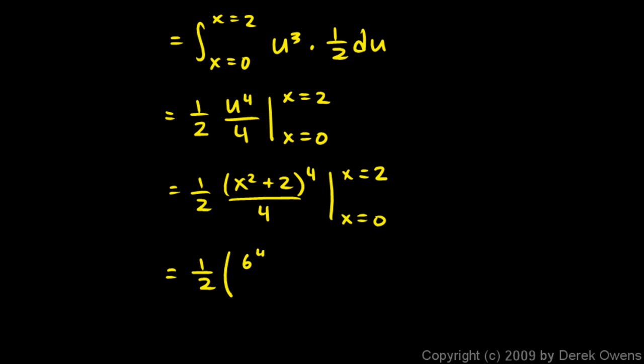So this is 6⁴/4 minus, and now we plug in the 0 right here for x. That's 0 + 2 is 2⁴/4, and I'm just keeping the 1/2 factored out over here. And this comes out to 1/2 times 324 minus 4, which is half of 320, which is 160. And that's our final answer.